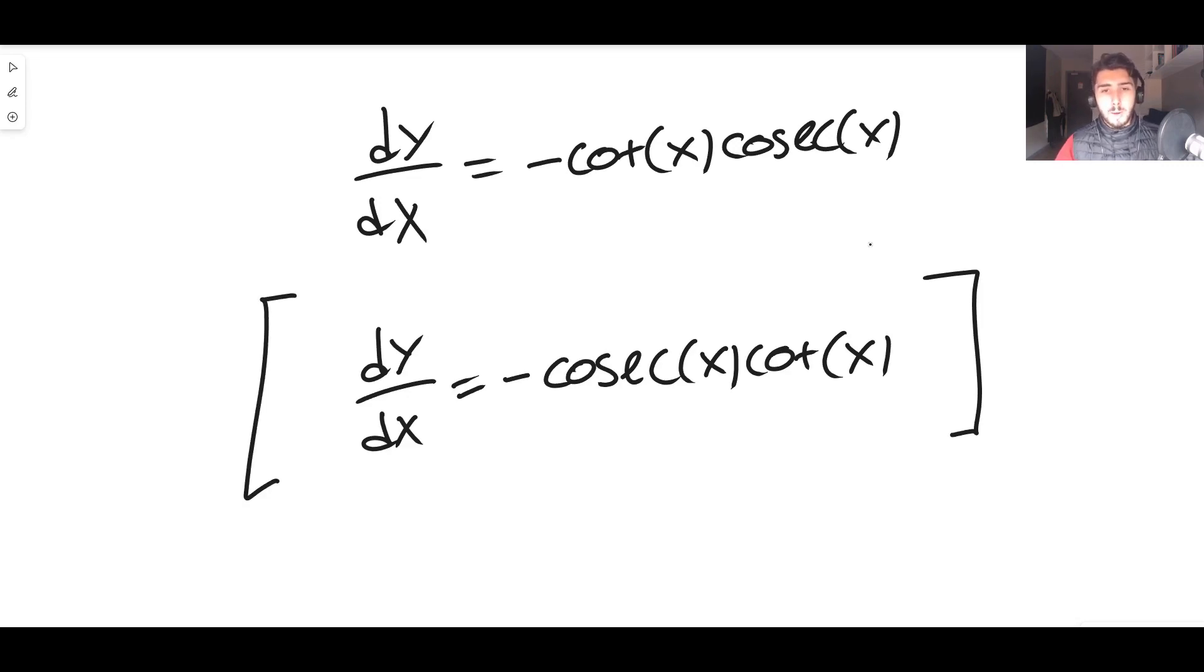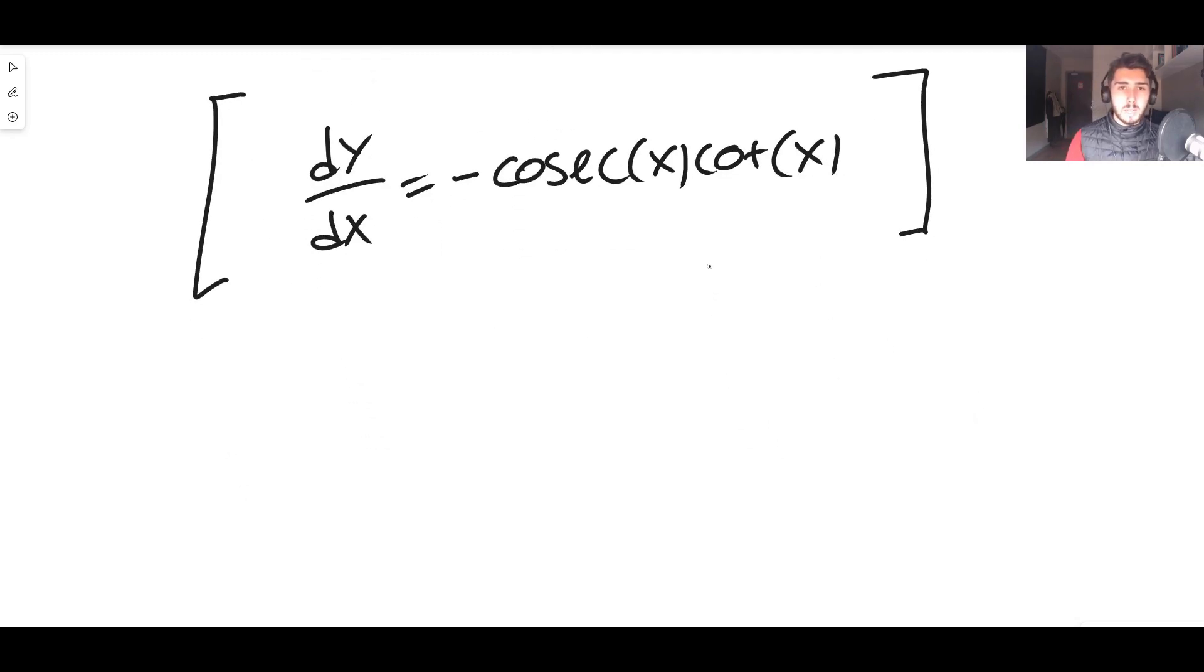And this is the answer: the derivative of cosec(x) is minus cosec(x) times cot(x). Out of curiosity, if it was not cosec of x, if it was maybe cosec of 2x that you wanted to differentiate, the derivative of cosec of some constant times x like this—